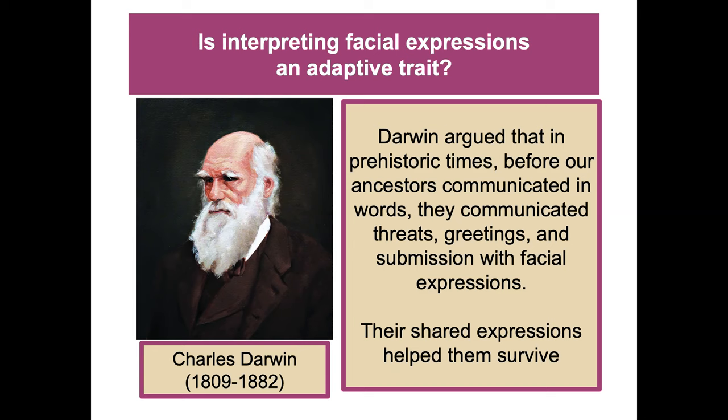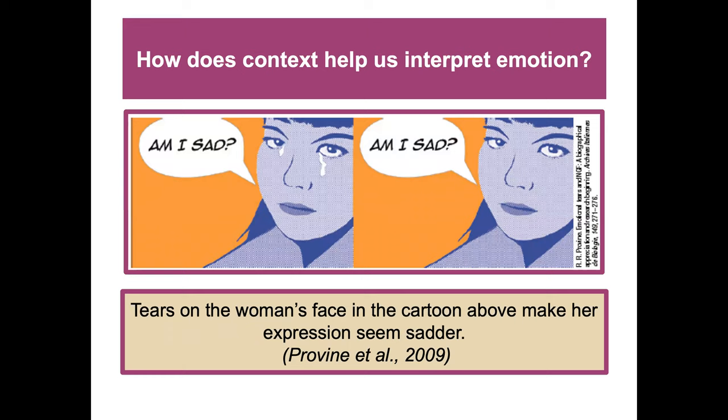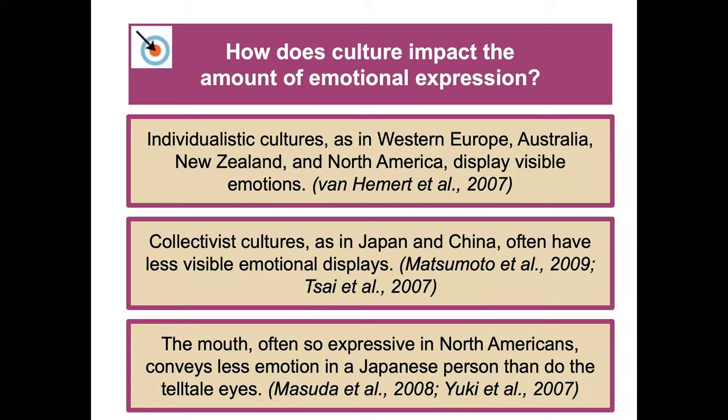How does context help us interpret emotion? Tears on a woman's face make her expression seem sadder, so context changes our interpretation of emotion. How does culture impact the amount of emotional expression? Individualistic cultures, such as in Western Europe, Australia, New Zealand, and North America, display visible emotion more. Collectivist cultures, like those in Japan and China, often have less visible emotional displays. The mouth, often so expressive in North Americans, conveys less emotion in a Japanese person than do the eyes.